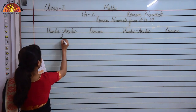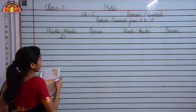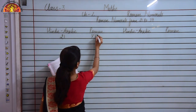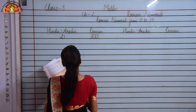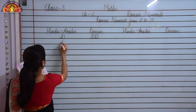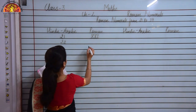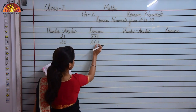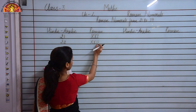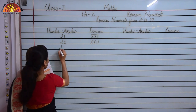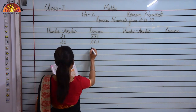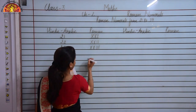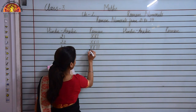Now how will I write 21 in Roman numeral? I will write XX and then add I to it, so this represents 21. Now 22 — I will write XX and then add II to it. So 10 plus 10 is 20, and 20 plus 2 is 22. Similarly to write 23 I will write XX and then add III to it, so this represents 23.